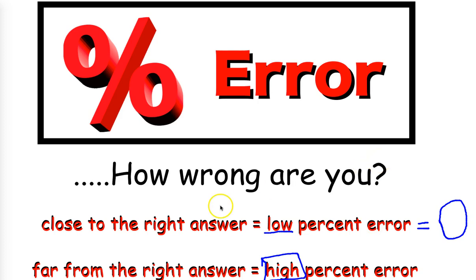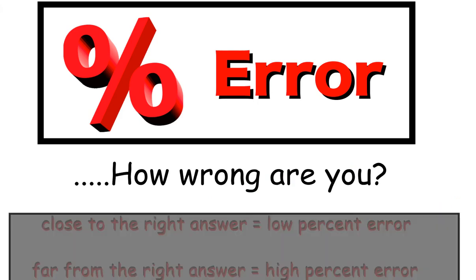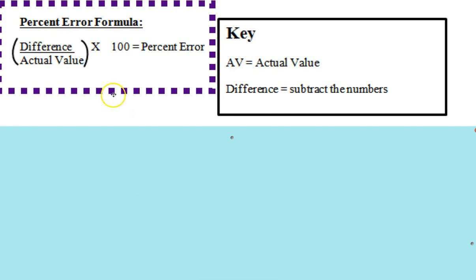So that being said, now that we know what percent error is, I think we should take a minute and look at the formula. The percent error formula is up here at the top of your screen. It says difference divided by the actual value times 100 equals percent error.